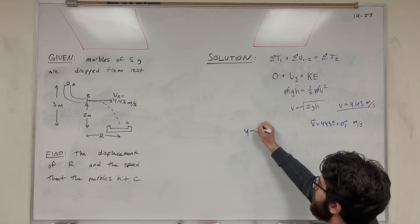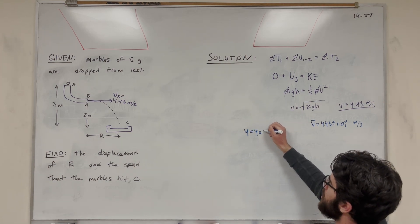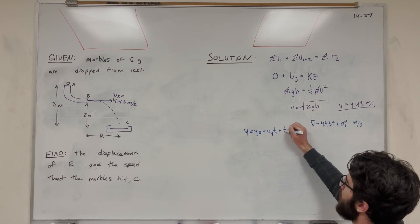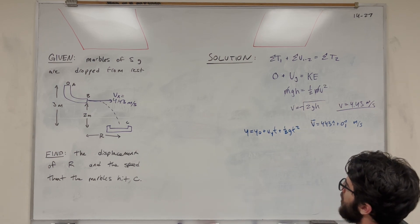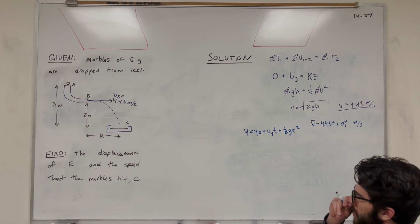So we can do that by just finding the change in position in the y direction. Our equation for that is going to be y is equal to y initial plus velocity y time plus ½ gravity time squared.